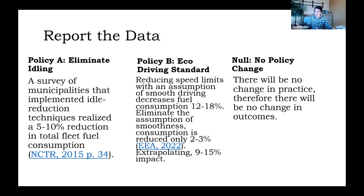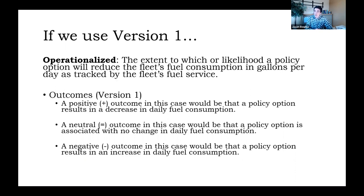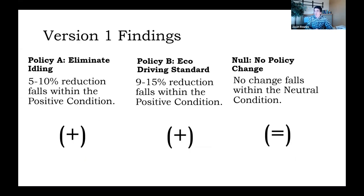So the impact of smoothness results in a 9% to 15% reduction in fuel usage. And of course, if there is no change in policy, the outcomes will be exactly the same as we're experiencing today. Going back to the simple operationalized criterion: positive is a decrease in daily fuel consumption, neutral is no change, and negative is an increase. By that definition, both policy options result in a positive condition because they both reduce fuel consumption, whereas no policy change results in a neutral condition.